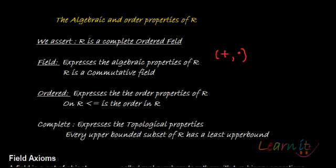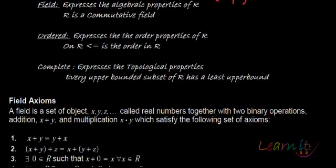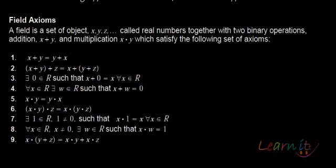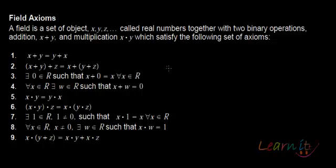So starting off with the field axioms or why do we call R a field? These are the nine major field axioms. A field is a set of objects, x, y, z, called real numbers together with two binary operations as I said. One is addition, second is multiplication which satisfy the following properties.